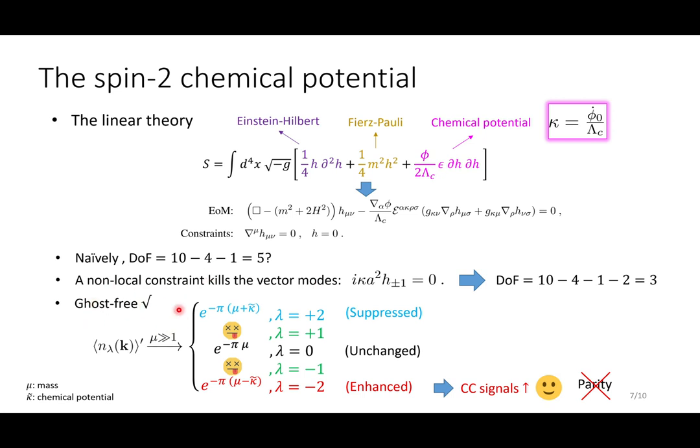This effectively makes the propagating degrees of freedom a further reduction of 2, which makes it only 3. Only the spin 2 and minus 2 and the longitudinal helicity 0 modes survive. We have checked that the remaining theory is ghost-free. And the equation of motion can be solved analytically. You can find the particle production number via a traditional Bogoliubov transformation.